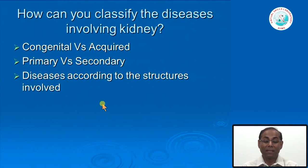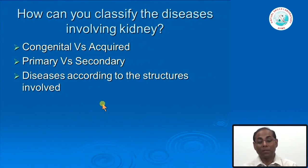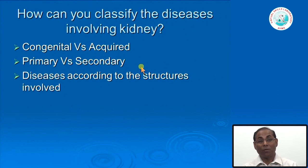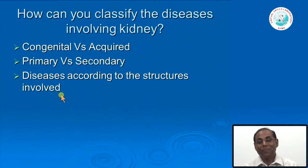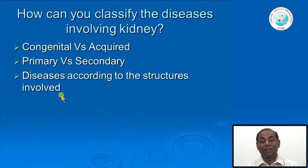For example, if a systemic disease such as systemic lupus erythematosus or hypertension involves the kidney, the kidney damage caused by hypertension would be a secondary disease. Whereas, if a disease like glomerulonephritis involves only the kidney with no other organ affected, we call that a primary disease. We can also classify diseases according to the structures involved. From a pathological point of view, knowing the cell types in the glomerulus, the glomerular basement membrane and matrix, and the molecules maintaining the slit pore makes it easier to understand and classify the diseases.